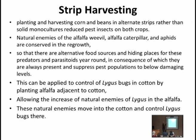Natural enemies of alfalfa weevil, alfalfa caterpillar, and aphids are conserved on the regrowth so that there are alternative food sources and hiding spaces for predators and parasitoids around the year. As a consequence, they are always present and suppress pests by amelioration. عندما تزرع بمناطق وتحصد أول صف وتترك الثاني، يكون المكان الذي تركته ملاذاً للأعداء الحيوية.